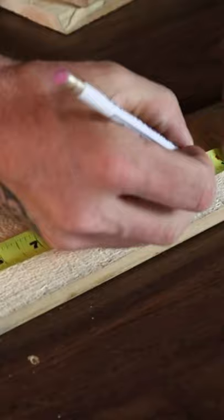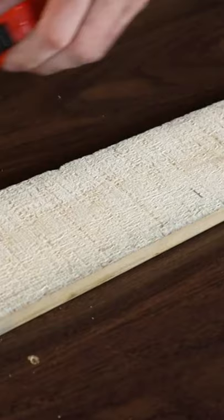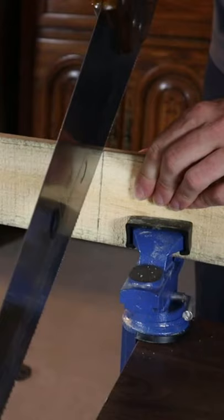So now I'm going to mark and cut the pieces that go around the bottom of the bench top, the skirt or whatever you might want to call it. The short side is going to be 11 1/2 inches and the longer side is going to be 28 inches. I'll go ahead and cut those out now.